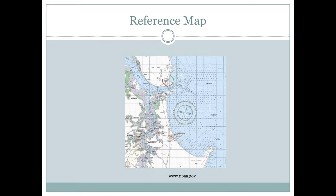A similar map is published by NOAA, the National Oceanographic and Atmospheric Administration. This one is specifically a nautical chart used to show how deep the water is, so that if you're navigating a boat, you would know where it would be safe and not safe to go. Those are two examples of reference maps.